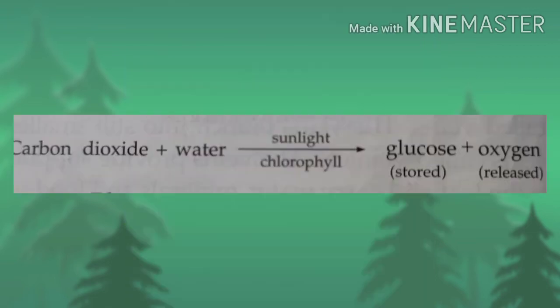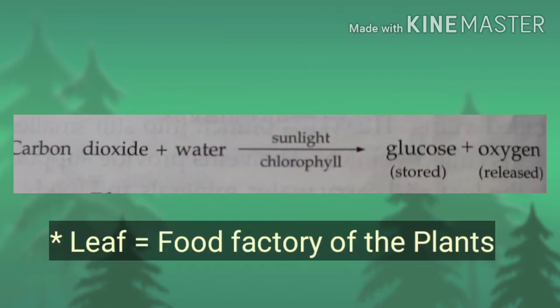As the green leaves prepare food for the plants, they are called the food factory of the plant. Plants use glucose as food and leftover glucose is stored in stems, seeds and fruits as starch and sugar.